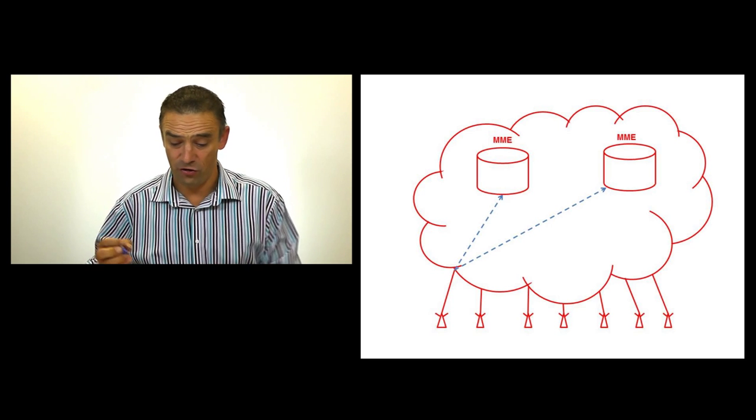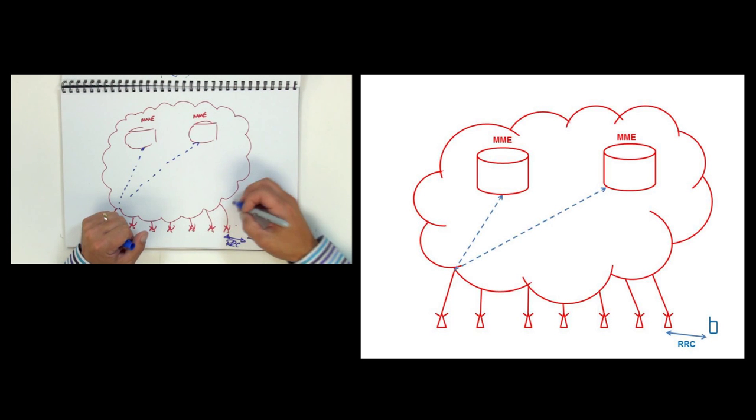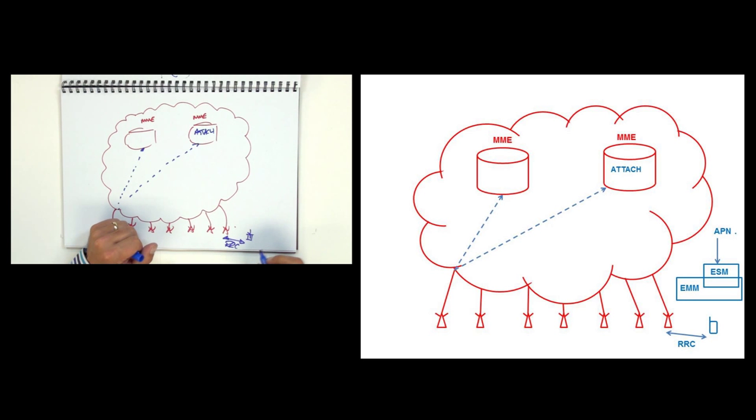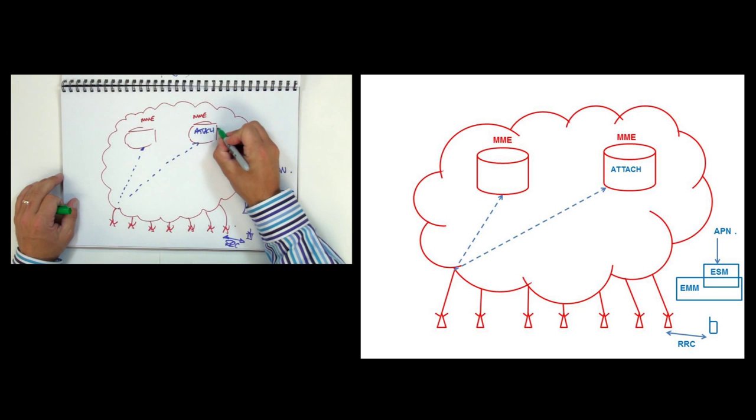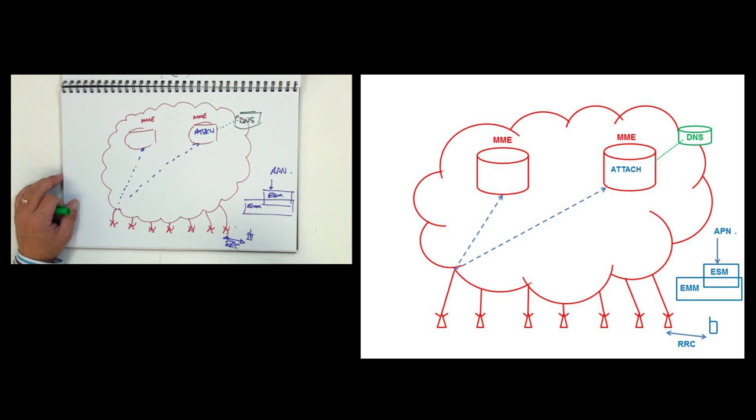Now, assuming that the user has switched on for the very first time, my user is going to switch on, establish a radio connection to an ENOB. This ENOB, based on load balancing, is then going to attach that user to an MME. Now, part of the attach process, which is an EMM process, an enhanced mobility management process, encapsulated inside the EMM message when this user initially attaches, is an ESM message, a session management message, which may contain an APN, an access point name. So really there's two things that are going to happen now.